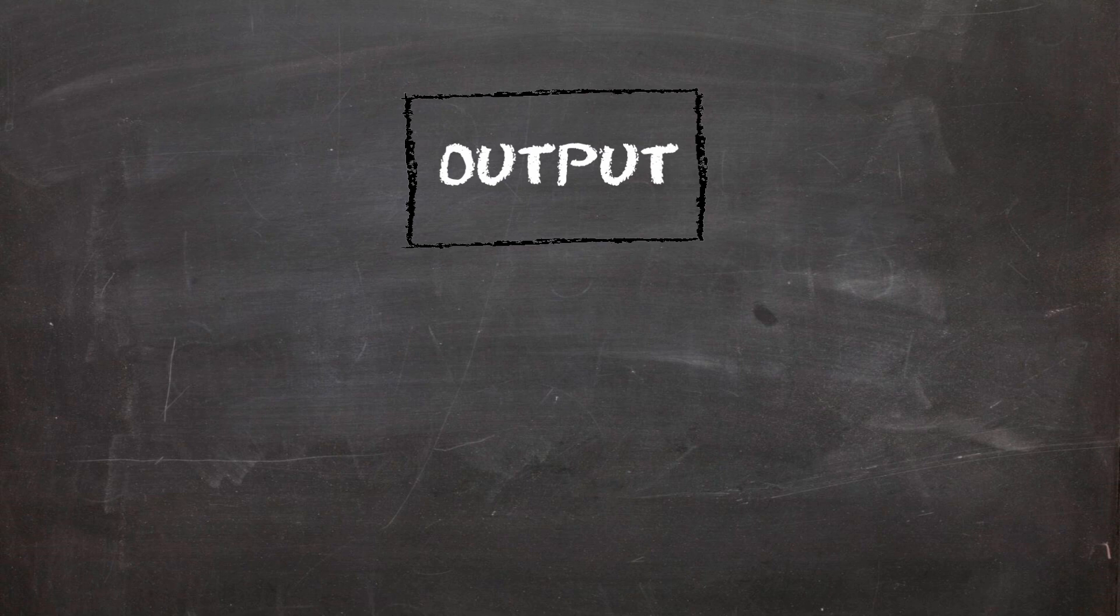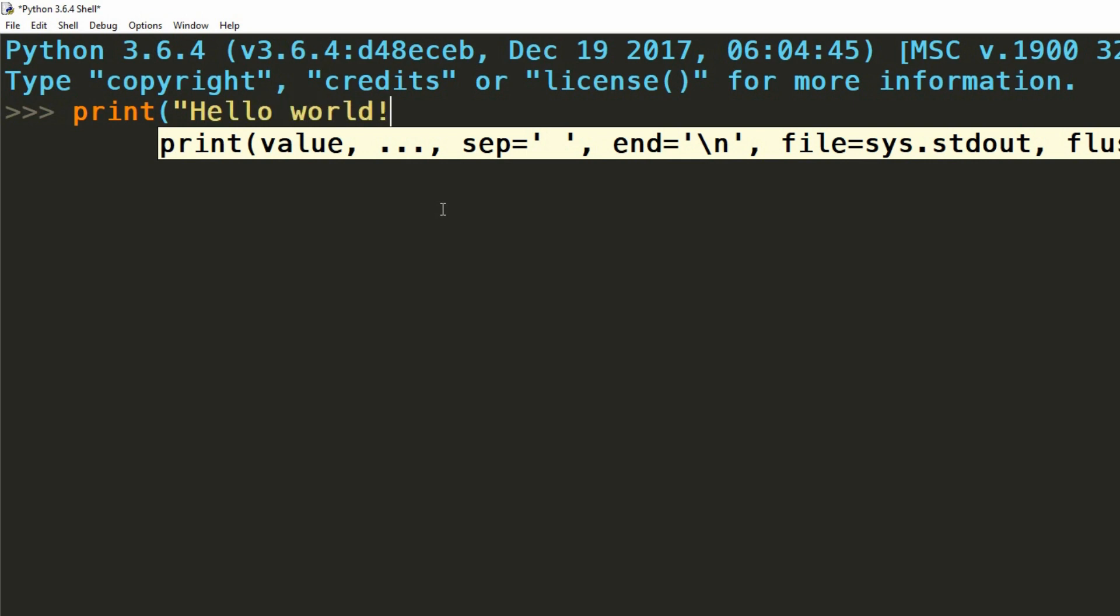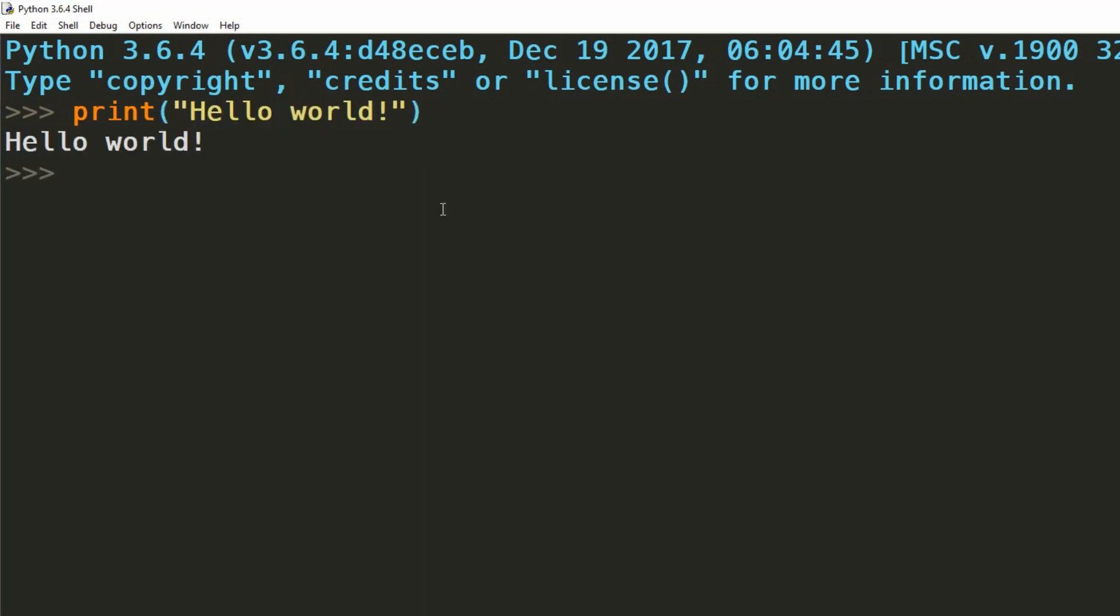Information is given out of the program using the print command. We can use it like so. See those quotes there? We'll get to why those are necessary in a future episode. For now, success! We've output some information.